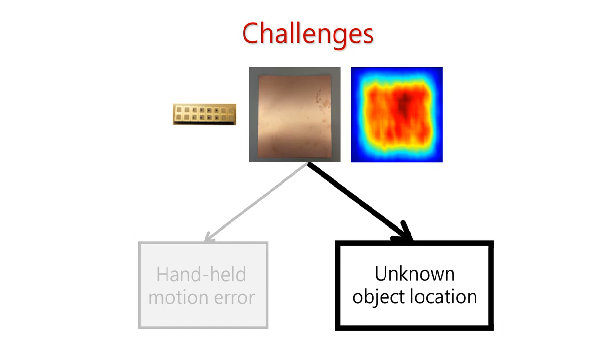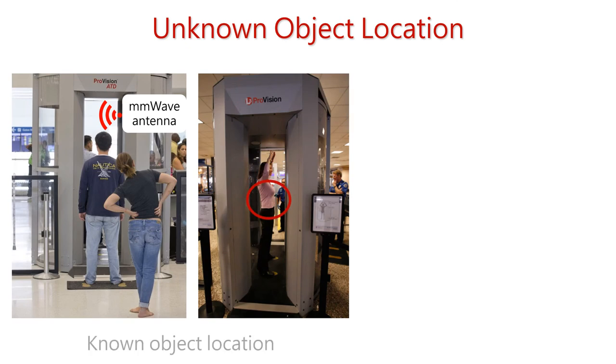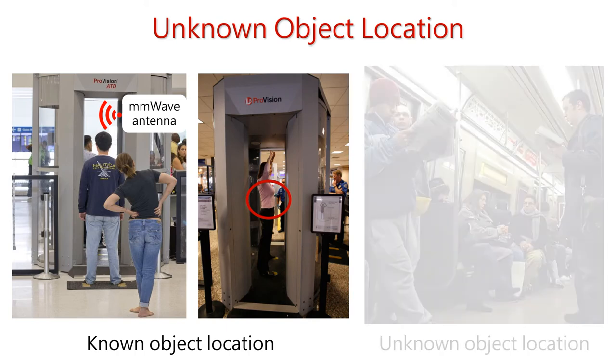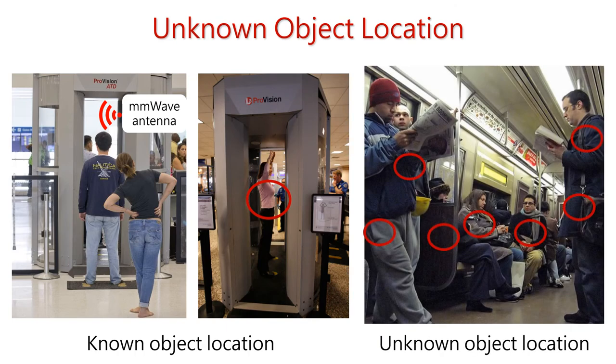As for the second challenge of unknown object location, why does it create an issue in millimeter wave imaging? Under a controlled imaging setup, the area to image is known, and thus the system also knows a rough location of the object. However, for handheld imaging, since the object could be hidden in line of sight, we won't know the location of the object.